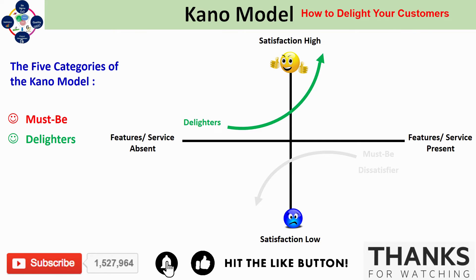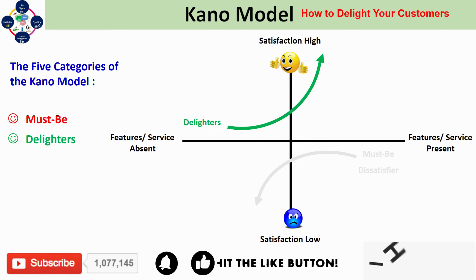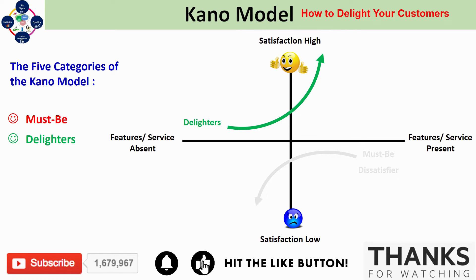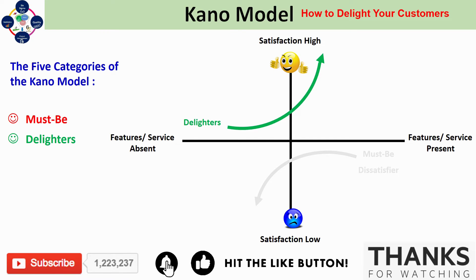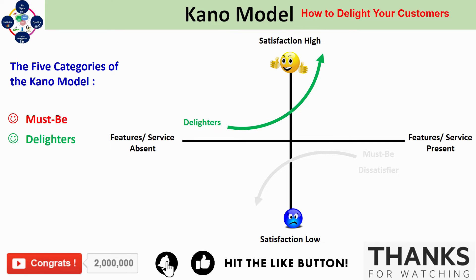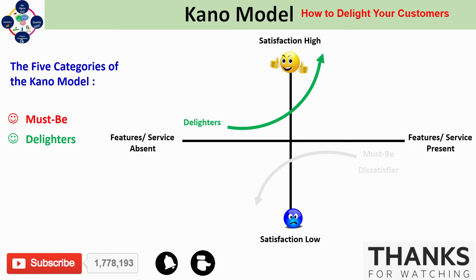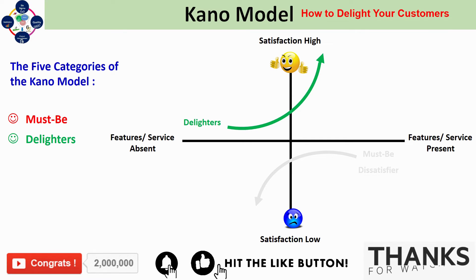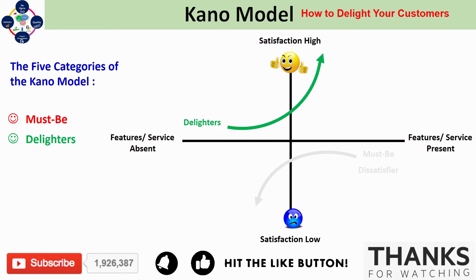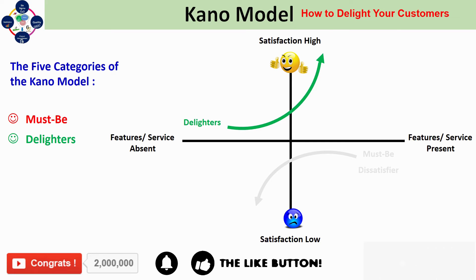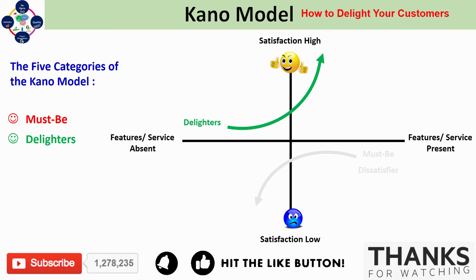Next are the delighters, which are basically the inverse of must-be features. Simply including these features, no matter the level of functionality, can be enough to enhance user satisfaction. The absence of an attractive feature doesn't affect user satisfaction at all since the user didn't expect it in the first place — it is a surprise. A best example: if you are selling a car and promise a mileage of 20 miles per liter, but the customer actually experiences 30 miles per liter, that is a true delight.